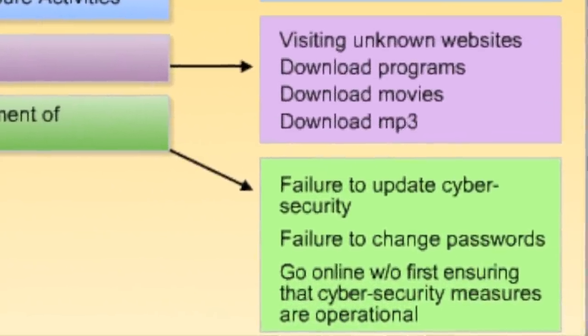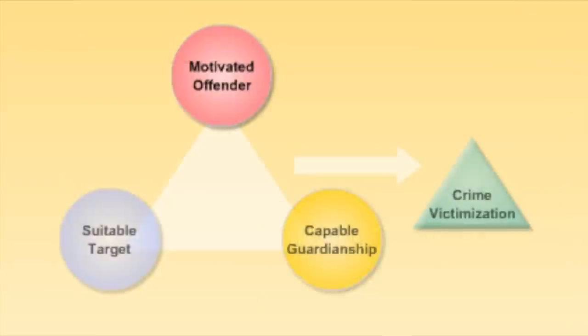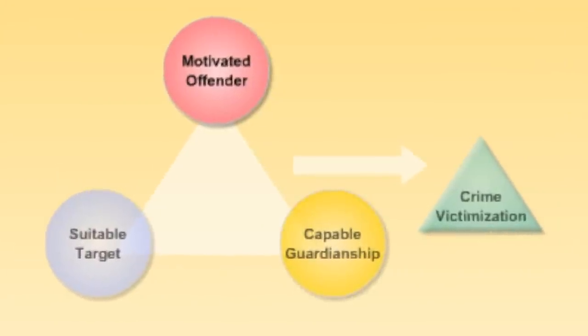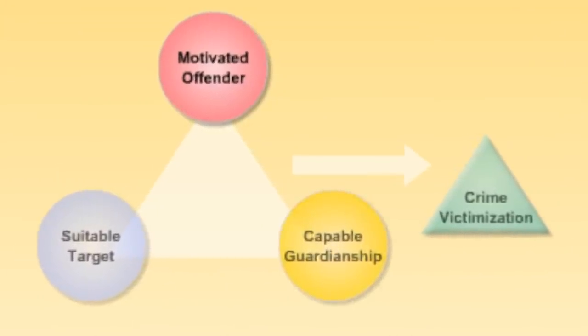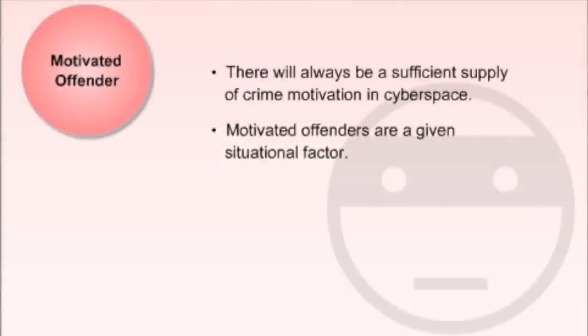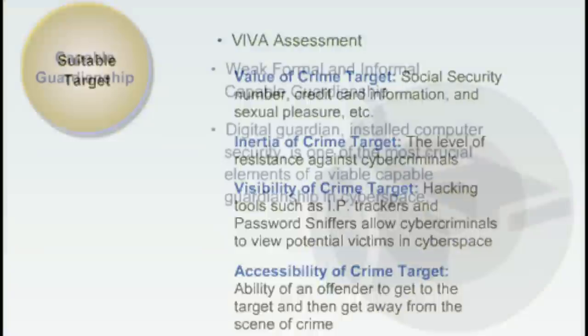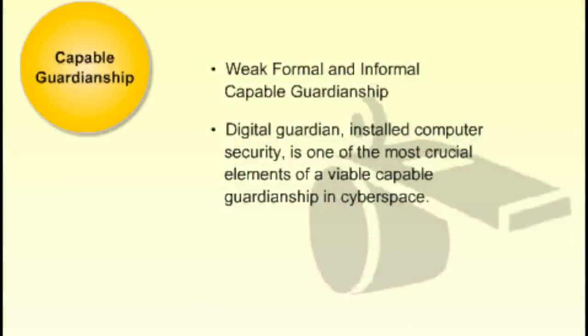Possibility of crime occurrence can be determined by three tenets. First, a motivated offender. Second, a suitable target. Third, the absence of capable guardianship.